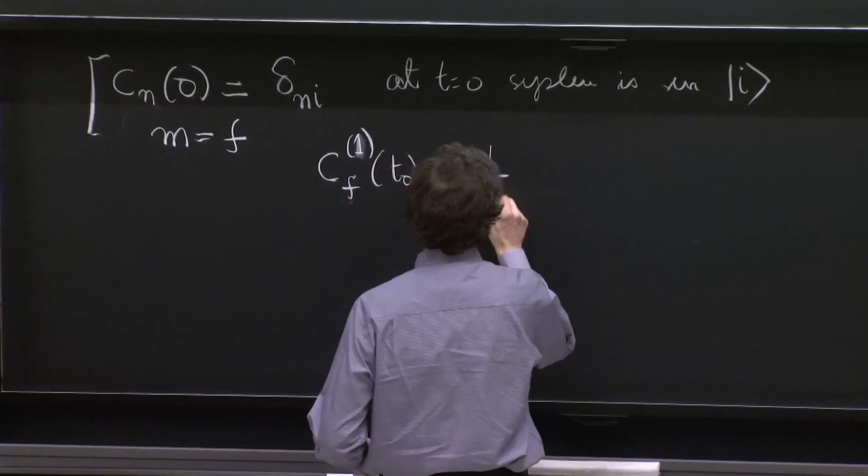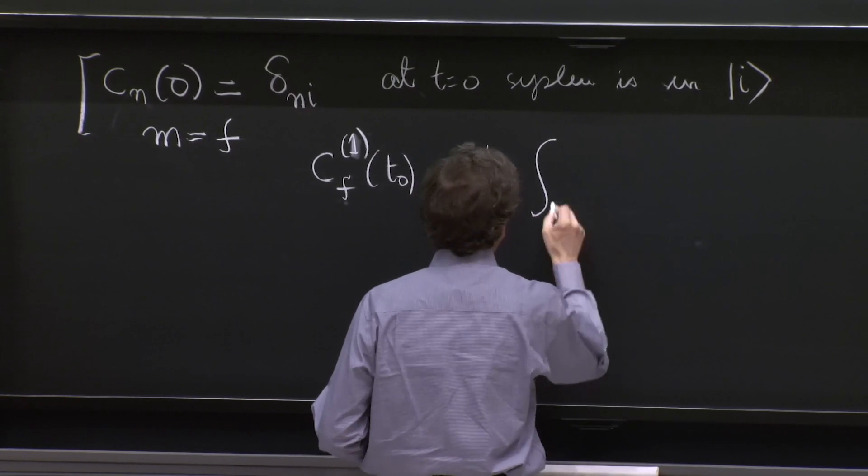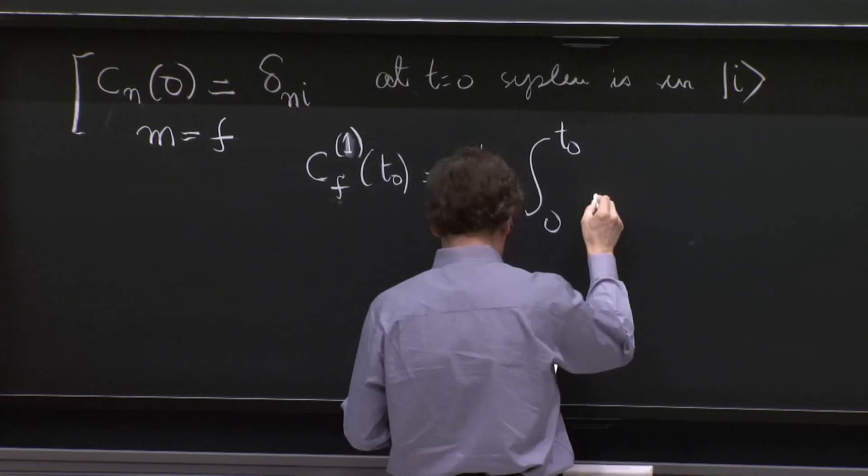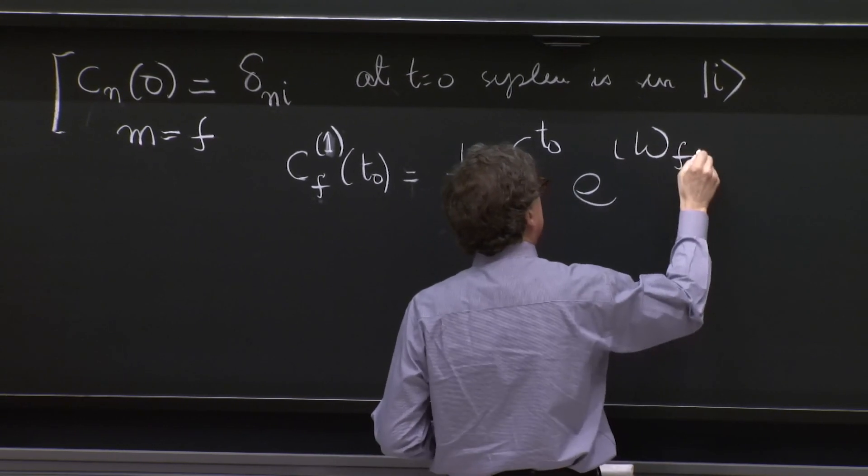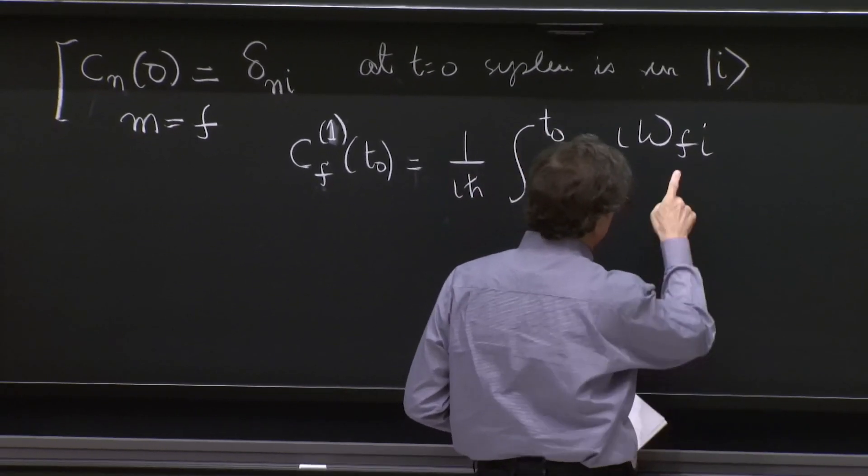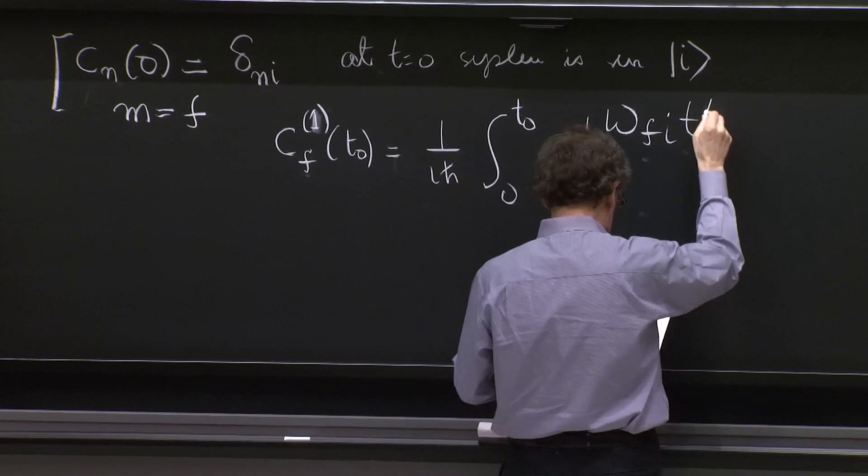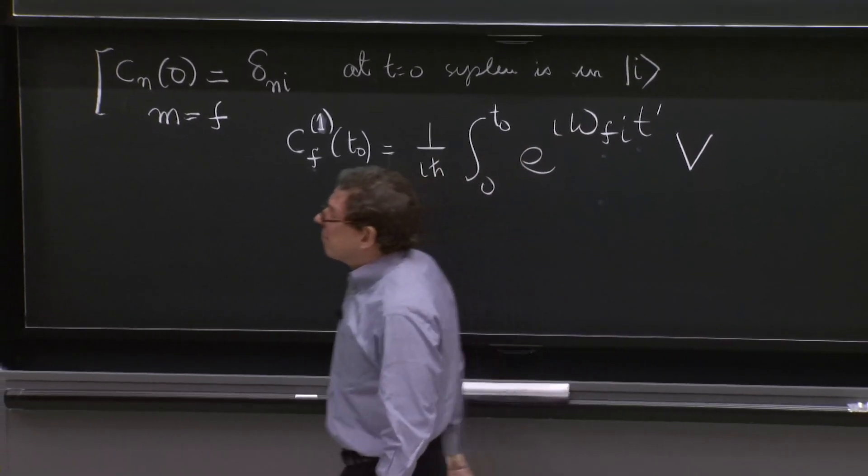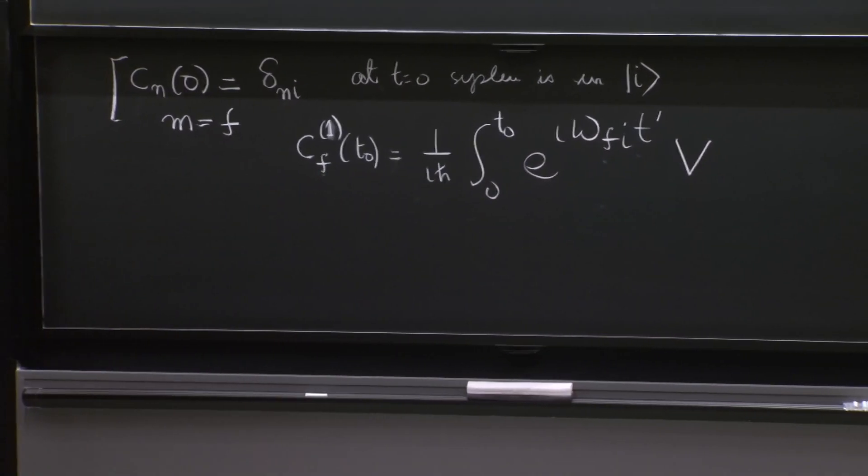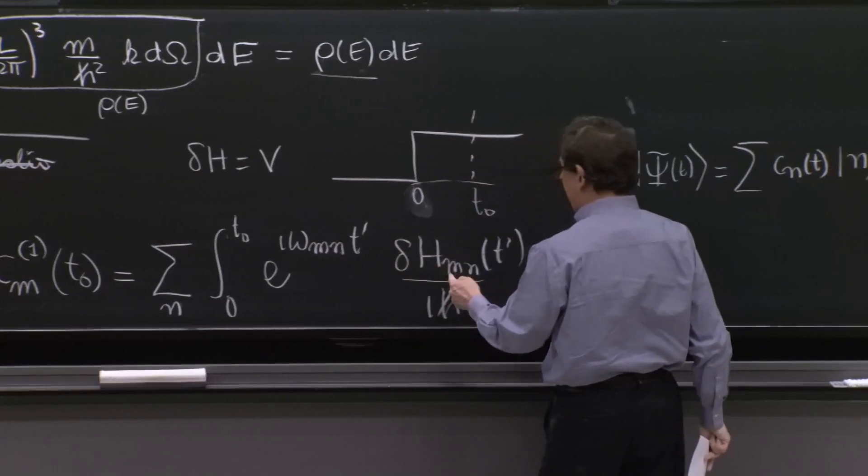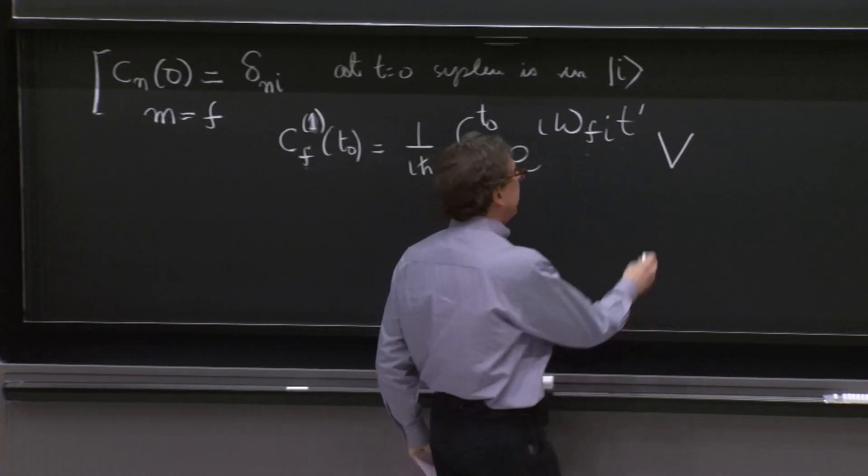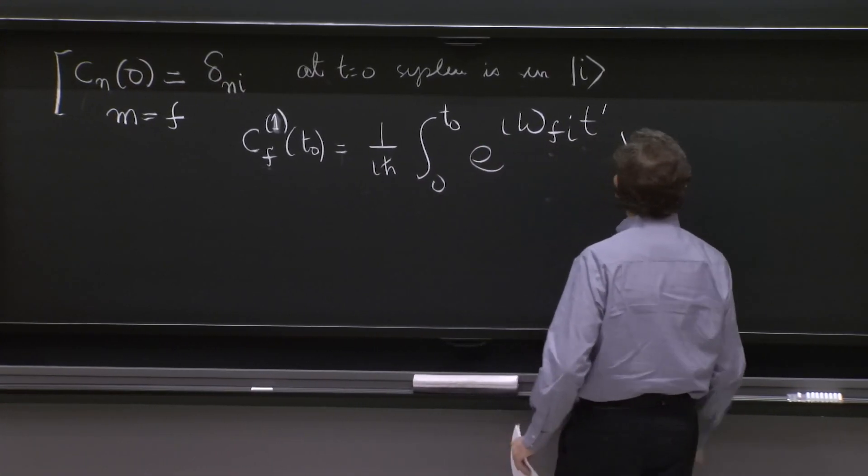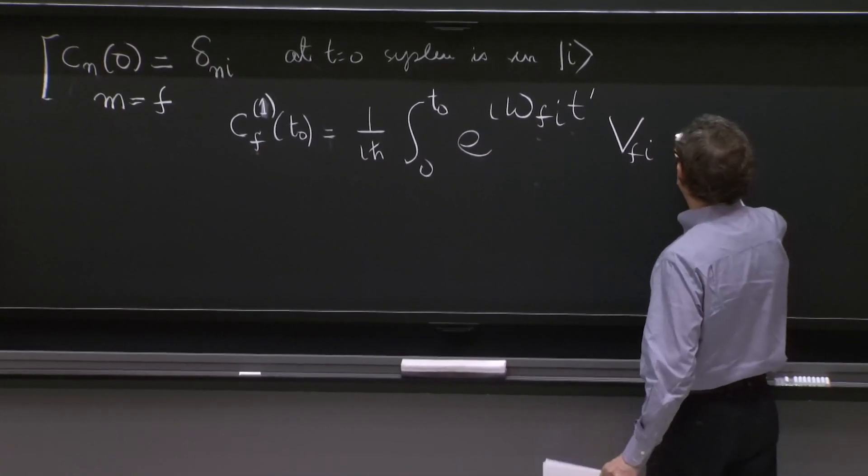The sum is gone. Sum over n just applies for n equals i. So i will go here. We'll have 1 over i h bar, 0 to t naught, e to the i omega final state to initial state. That's m and n. And t prime v fi, because the delta h is v. And we're going from initial to final. So fi here. And then dt prime.